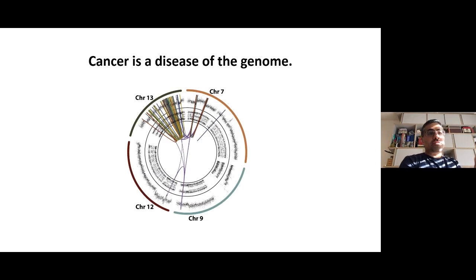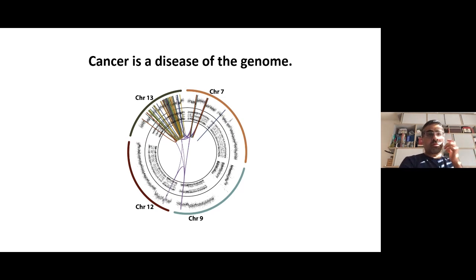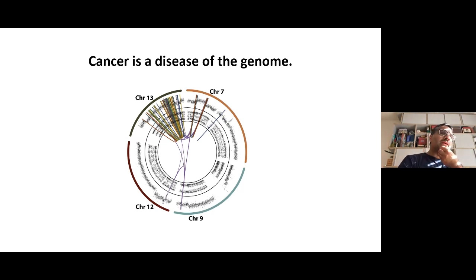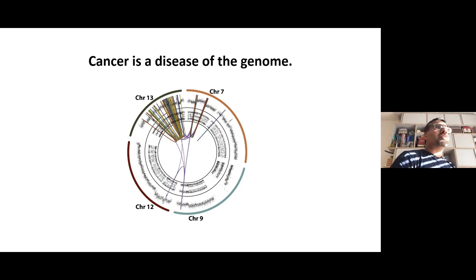I'll garnish my talk with the odd picture. What I'm showing you here in the background is a circus plot, which I'm sure many of you are familiar with. It's a way of representing a genome, and rather than having a linear copy number plot, we look at a circular structure. This particular one is from a really quite seminal paper by Peter Campbell from over 10 years ago, where he described this shattering of chromosomes called chromothripsis.